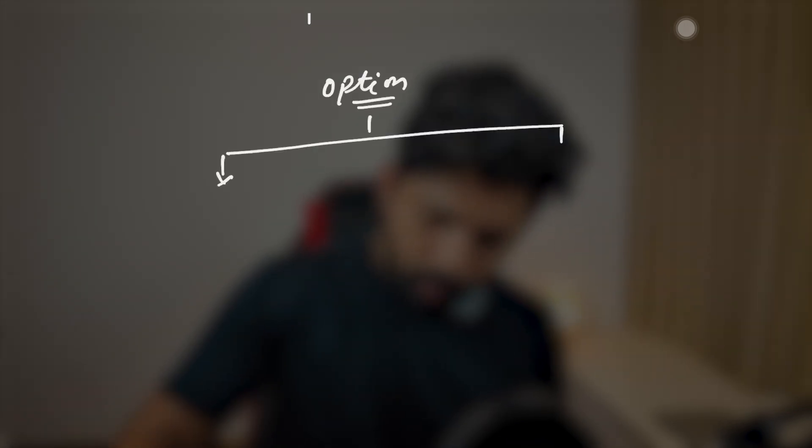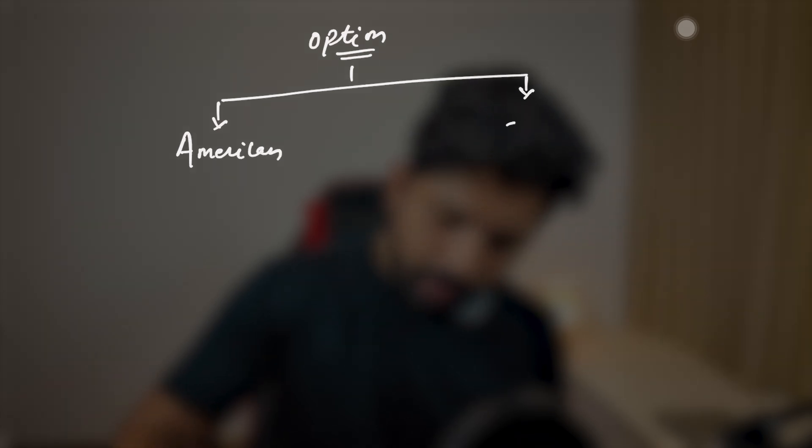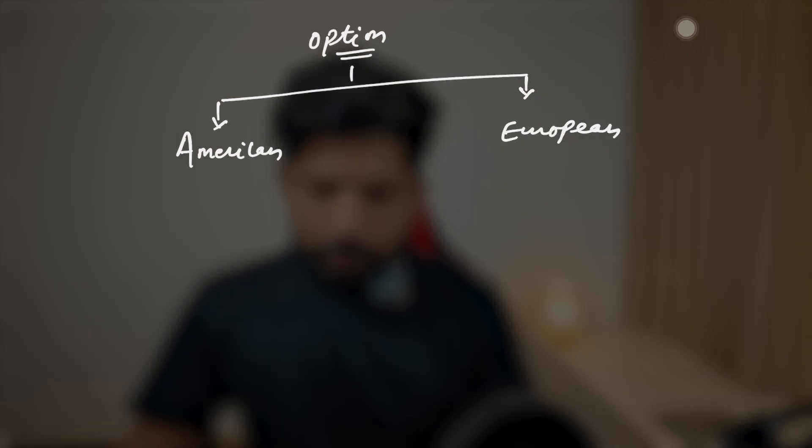In the previous session we learned about the primary types of options — the call option and the put option in detail. Now we have another type: the American option and the European option. The difference between American and European options is very slight. American options can be exercised any time before the expiration, while European options can only be exercised on the expiration date.